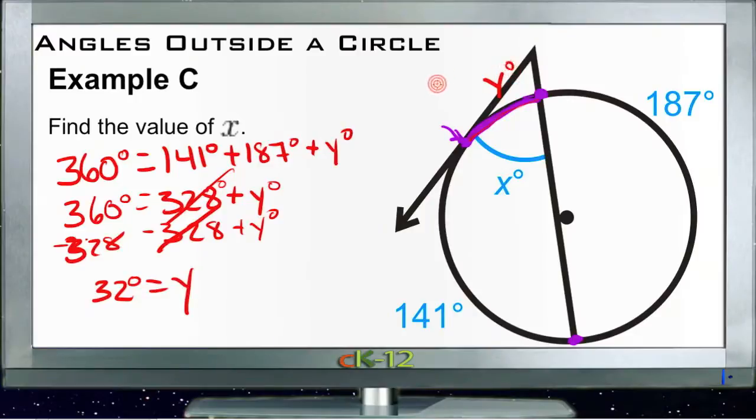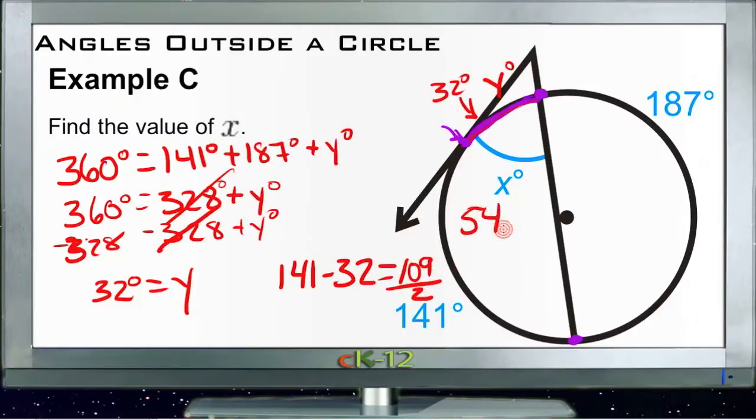So that gives us this little section in here, 32 degrees. Then we just need to find the difference between 32 and 141. So we say 141 minus 32. If this was 142, the difference would be 110. So this is 109. Divide that by 2 and that gives us 54 and a half. So x is 54.5 degrees.